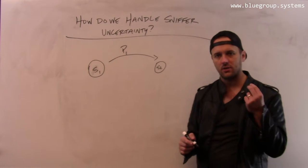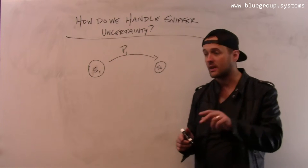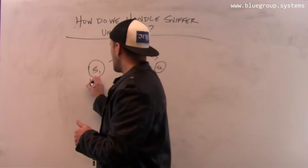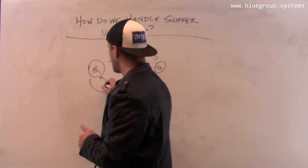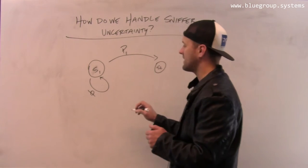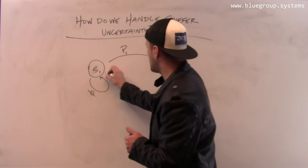So how do I augment the state machine to incorporate the sniffer uncertainty? I need to do two things. The first thing is, I need to create a null transition on this state.